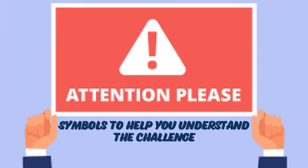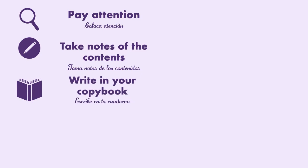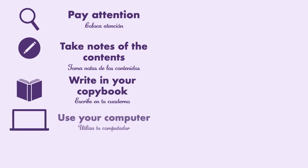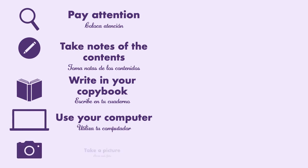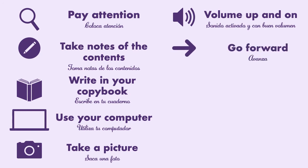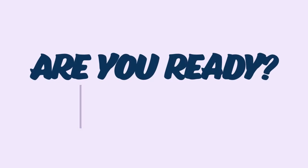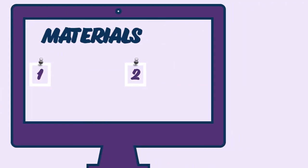Before we continue, pay attention to the following symbols — they will help you understand the challenge. Number one: pay attention. Number two: take notes. Number three: writing in your copy book. Number four: use your computer. Number five: take a picture. Number six: volume up and on. Number seven: go forward. Number eight: go back. Number nine: use your mobile device. Number ten: send an email.